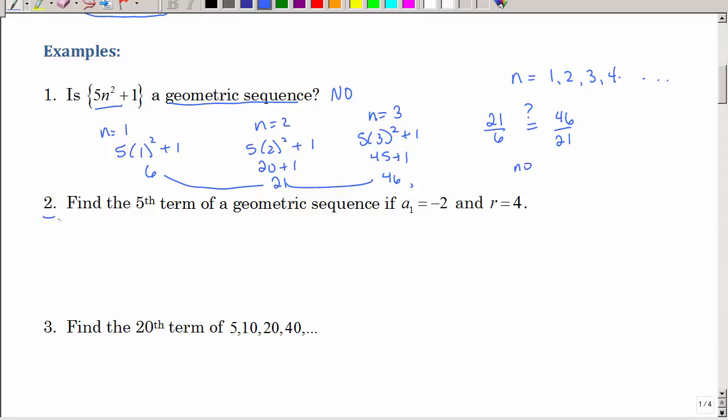Let's look at example number 2. Find the fifth term of a geometric sequence given this information. Now, we could list them out, right? If a1 is negative 2 and r is 4, that means I'm multiplying by 4. So, negative 2 times 4 is negative 8, times 4, times 4, and one more time. So, 4 times 8 is 32, I think 512. So, I know my answer is 512.